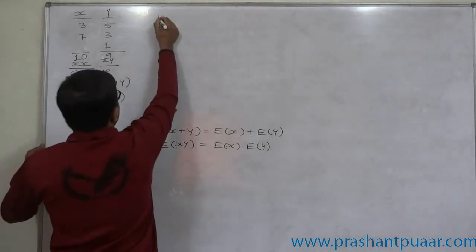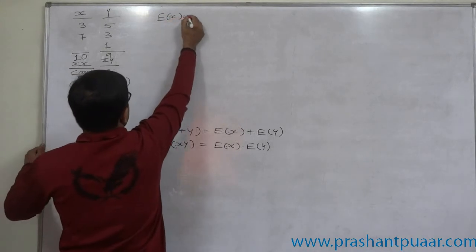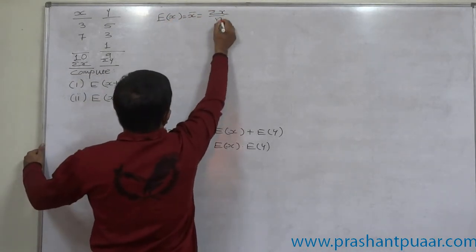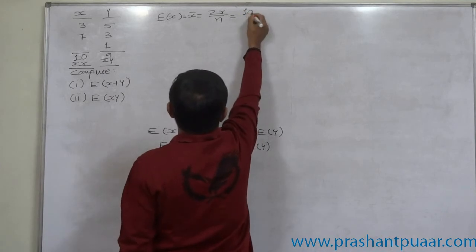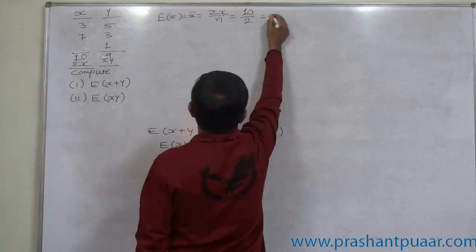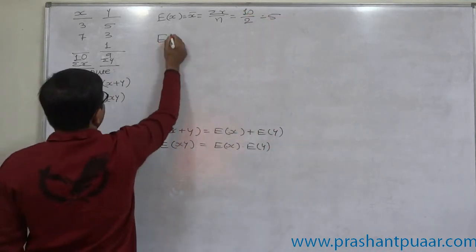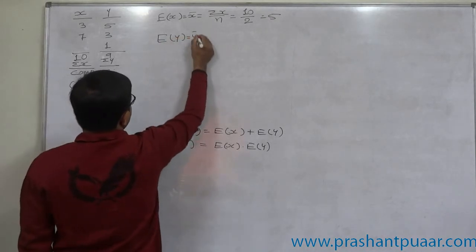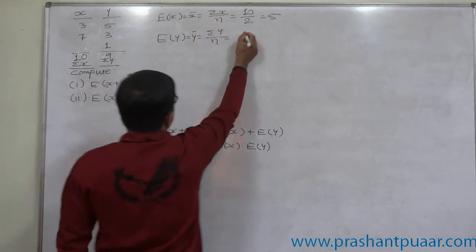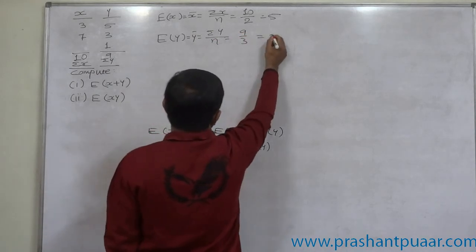Now, E of x in this case is x bar and this is sigma x by n. So it is 10 by 2 that is 5. Similarly, E of y is y bar in this case, that is sigma y by n, 9 by 3. So it comes to 3.